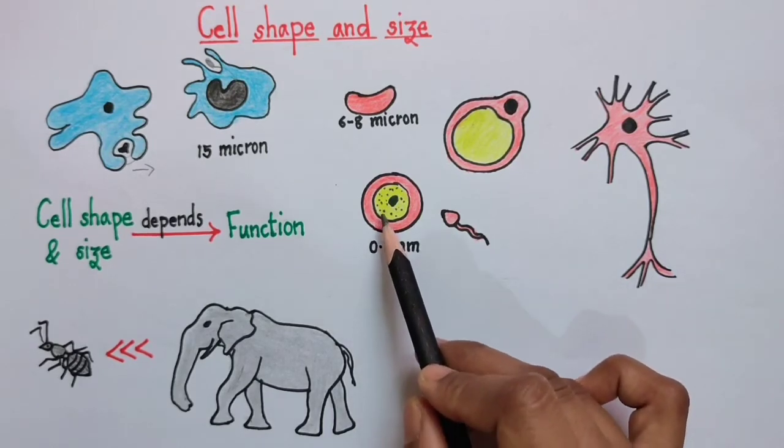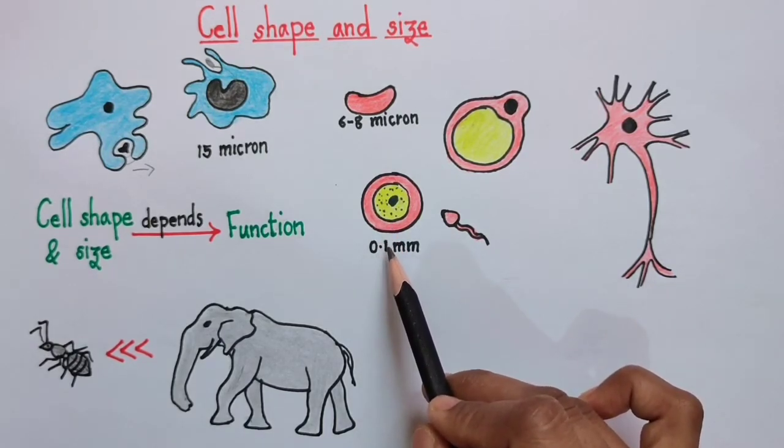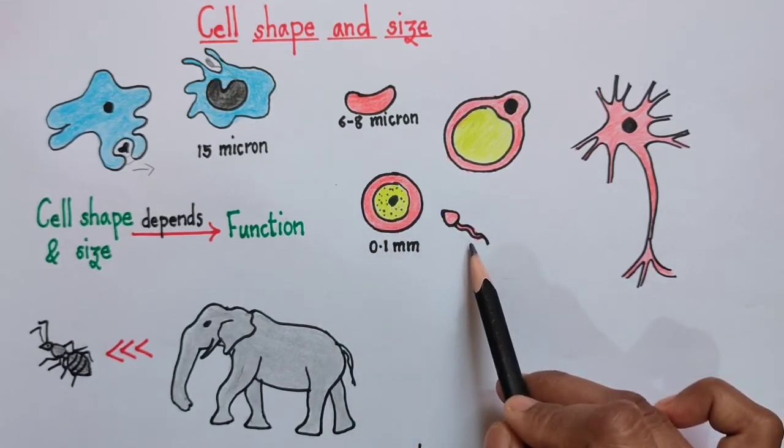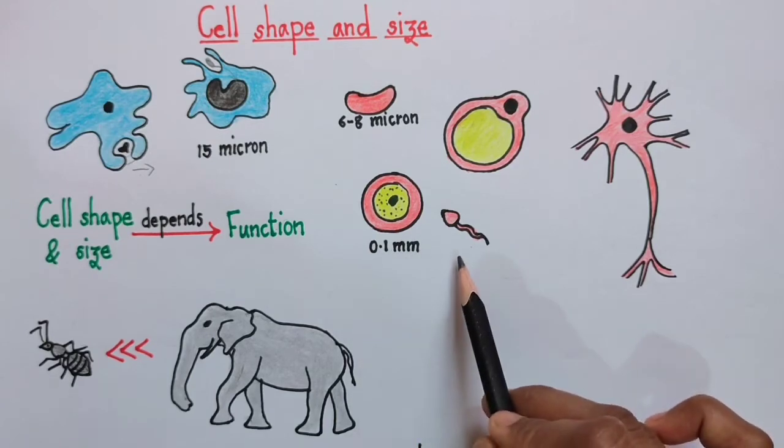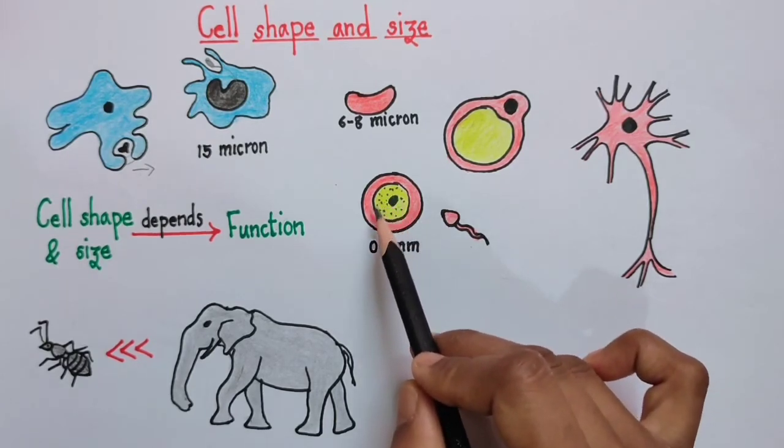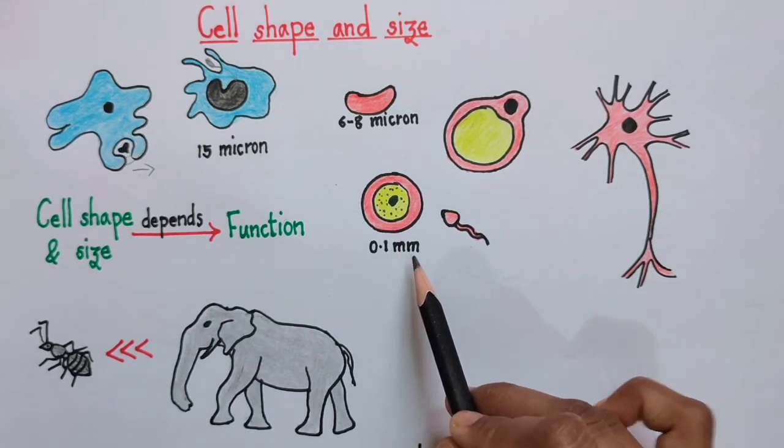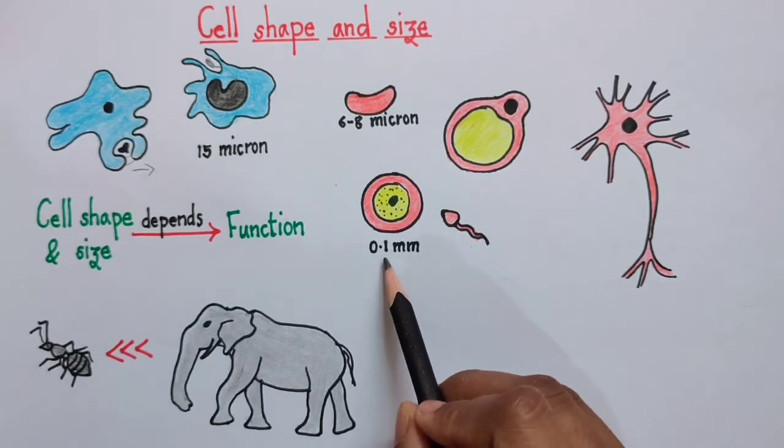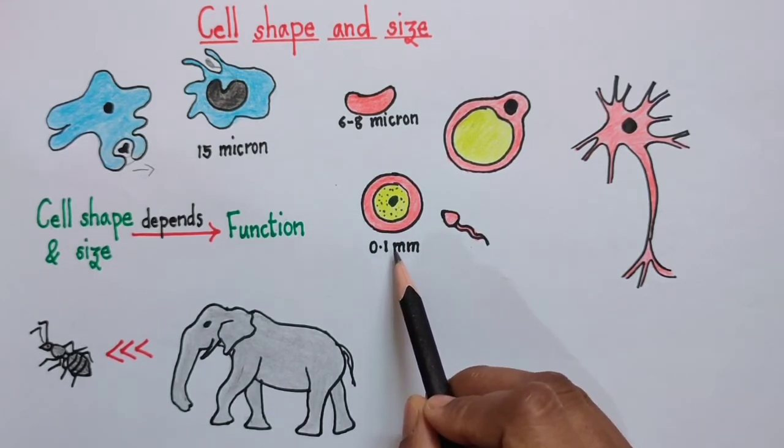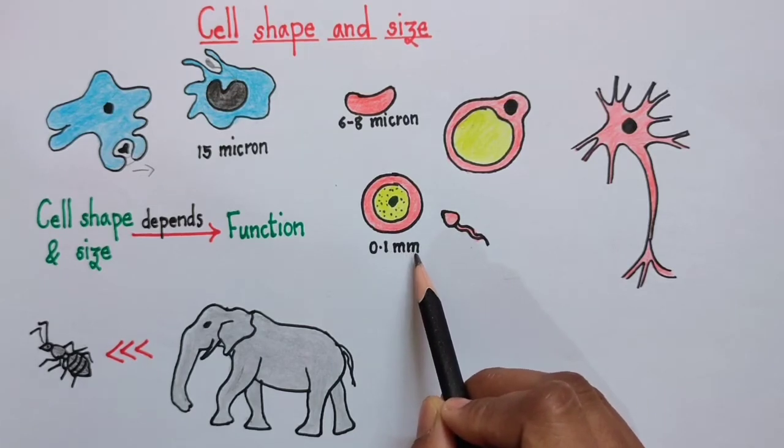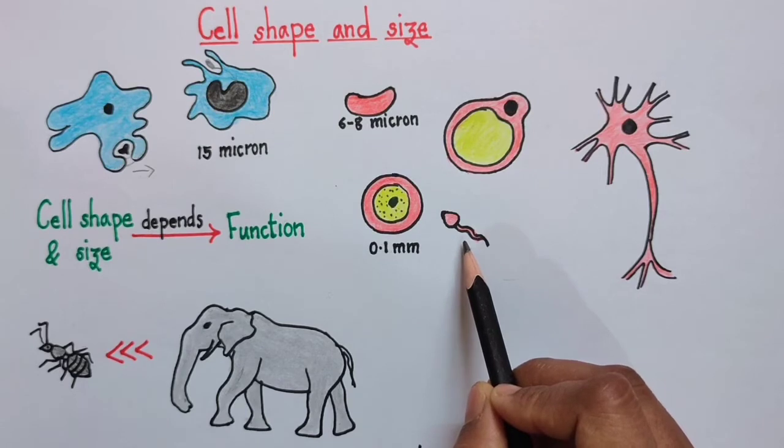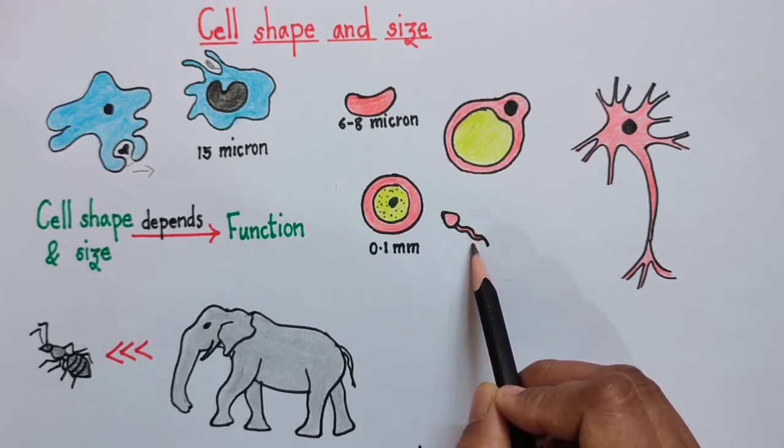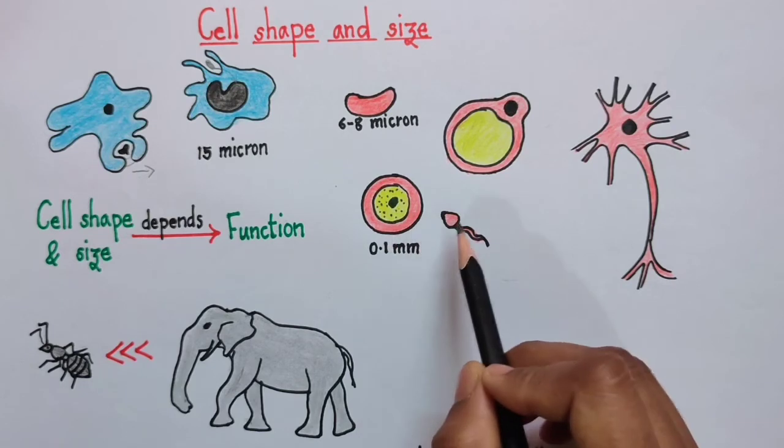Now the next example we have is of human ovum and human sperm. If you compare the sizes of the two, the human ovum is about 0.1 mm in size, and it is big enough to be seen by our naked eyes. On the other hand, human sperm is very small; by no chance you can see it by your naked eyes. So this was the difference in their sizes.